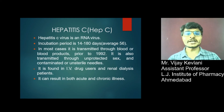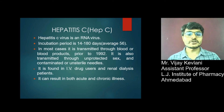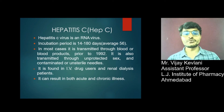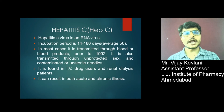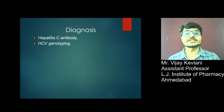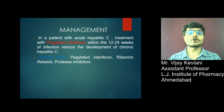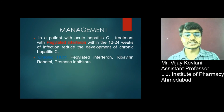Hepatitis C virus is an RNA virus with an incubation period of 14 to 180 days. In most cases it is transmitted through blood, unprotected sex, and contaminated or unsterile needles. It is found in IV drug users and renal dialysis patients. It can result in both acute and chronic illness. Chronic Hepatitis C virus infection results in liver cirrhosis, and there is no vaccine for Hepatitis C. Diagnosis includes Hepatitis C antibody testing and Hepatitis C virus genotyping. Treatment with pegylated interferon for 12 to 24 weeks reduces the development of chronic Hepatitis C. Chronic Hepatitis C can be treated with pegylated interferon, ribavirin, and protease inhibitors.